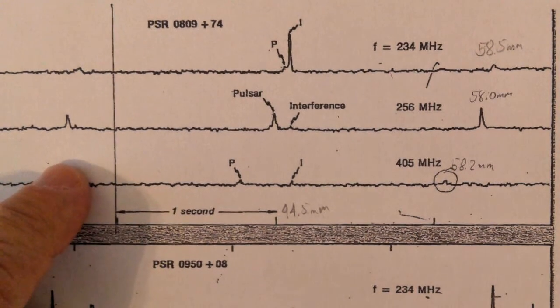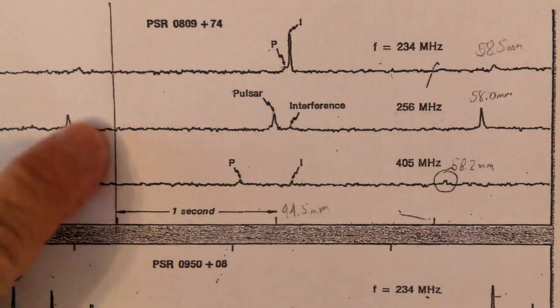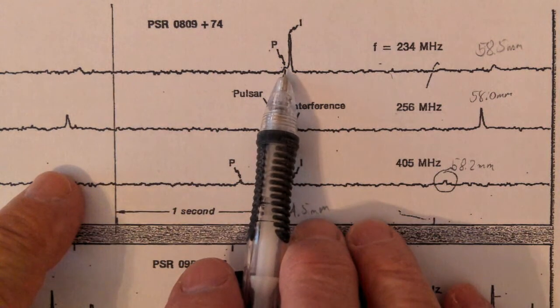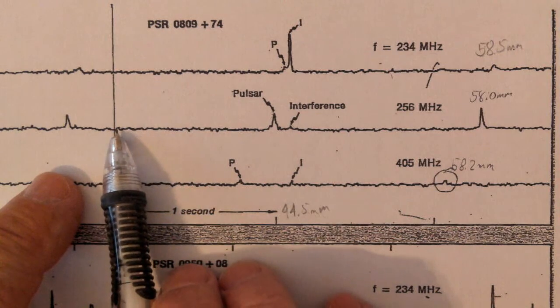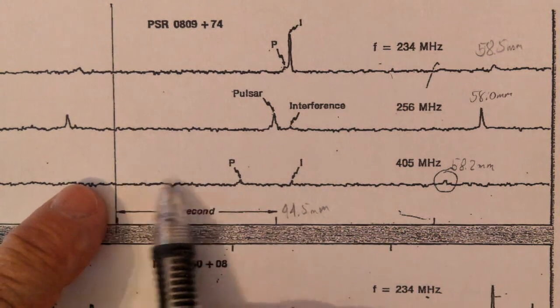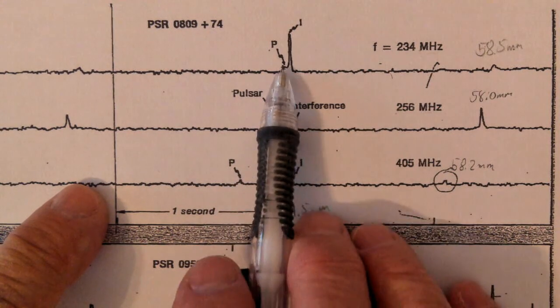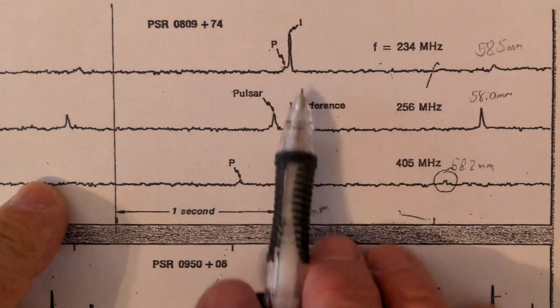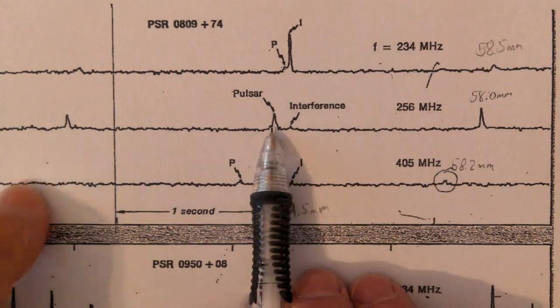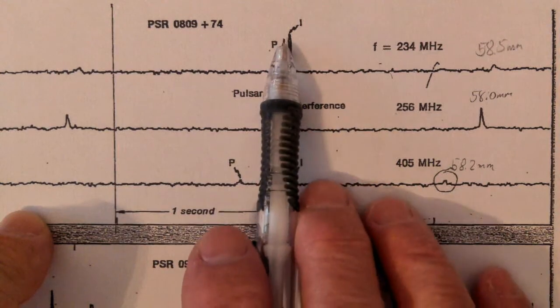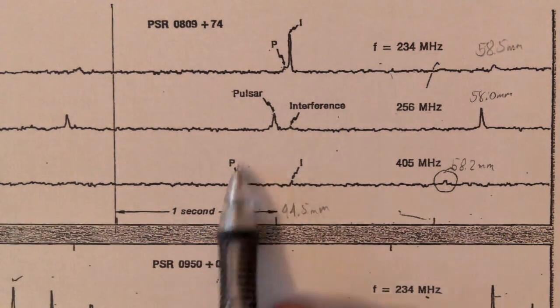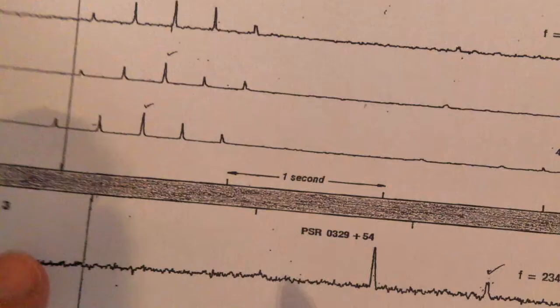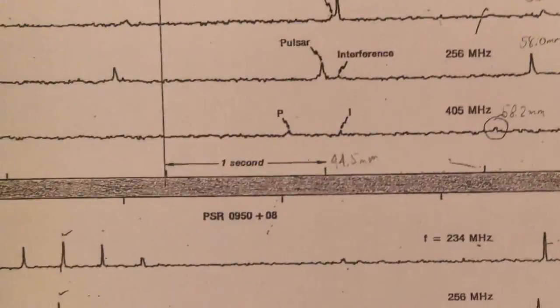To measure the time difference, we have to have some reference point to measure from. I've just drawn in a line here. We're going to measure the distance from the line to the pulse in each one of these. The only thing you have to be careful about is you have to measure to the same pulse coming through. So you couldn't measure to this pulse, and then to this pulse, and then to this pulse. You have to make sure you're measuring to the same pulse. I've marked which pulse to measure to.